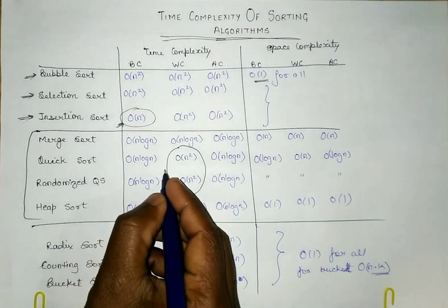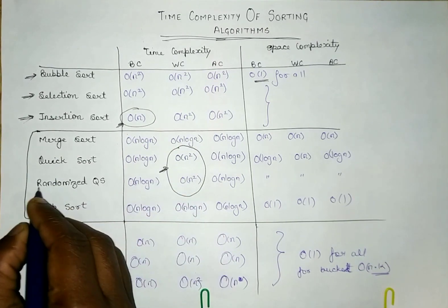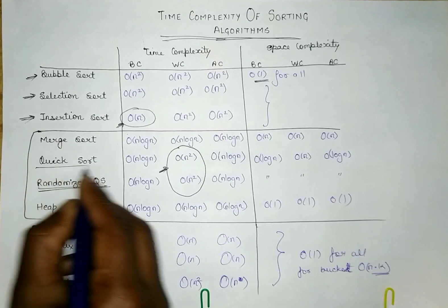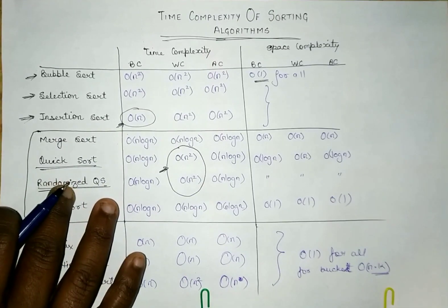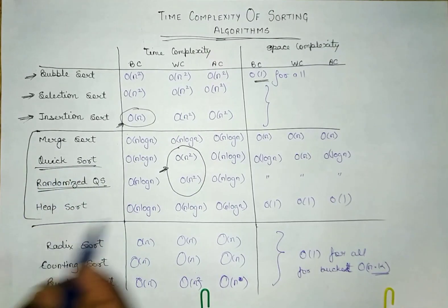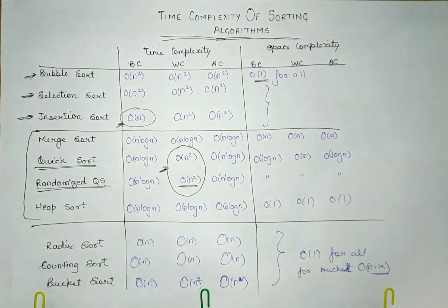So this is the exception. Randomized quick sort is also a quick sort, but this is somewhat better in terms of quick sort. But the worst case here is order of n square as well, but there are very rare chances that it will lie in the order of n square worst case time complexity.